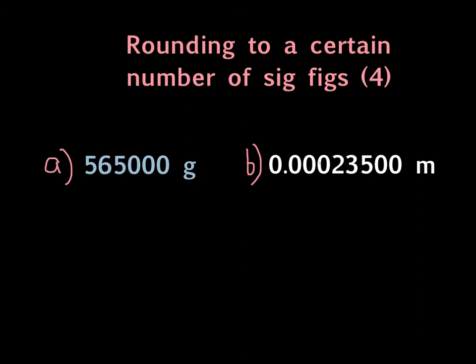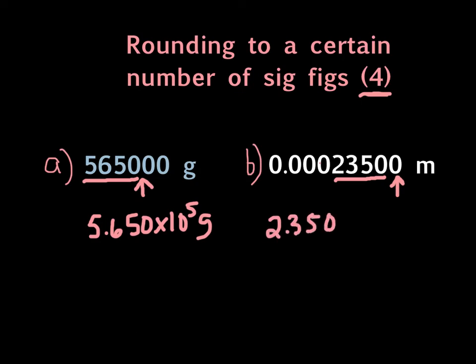And the last pair that we're going to do together is 4 significant figures. In order to do that, we have to 1, 2, 3, 4, count these. We look at that one right there, that zero, we do not round it up, so this is going to be 5.650 times 10 to the 5th grams. This one right here, we start the first non-zero number, 2, 3, 5, 0. This is the one we look at to determine whether we round it up. We do not. This is going to be 2.350 times 10 to the negative 4th meters.